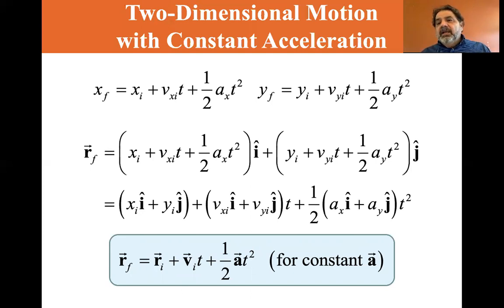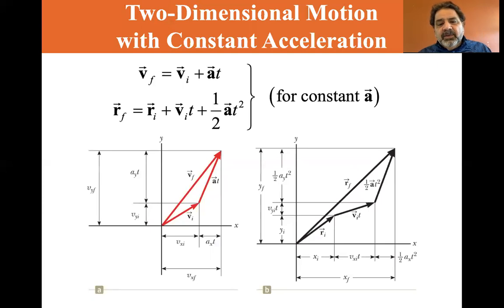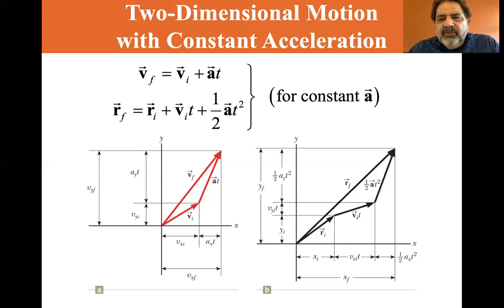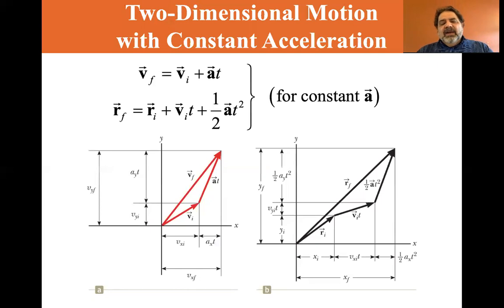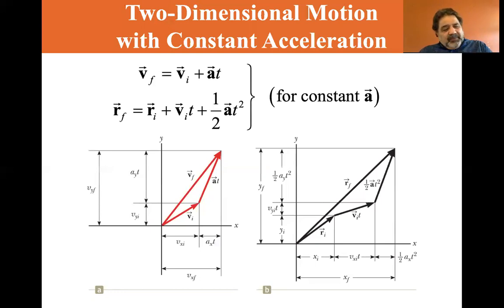It looks very much like the equations of motion we've had in the past, only we're looking at vectors this time. Be reminded that this is for constant acceleration. You can see that v final is equal to a vector sum: v initial, plus acceleration times t. Acceleration in meters per second squared times seconds gives meters per second, so a·t is a velocity vector. You're adding v initial plus the velocity from acceleration times time to get v final.